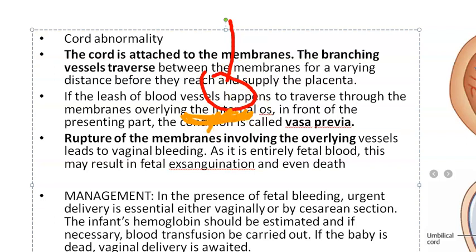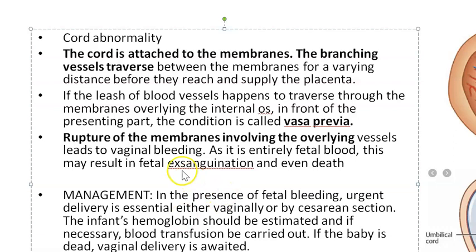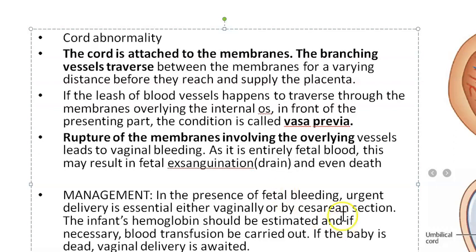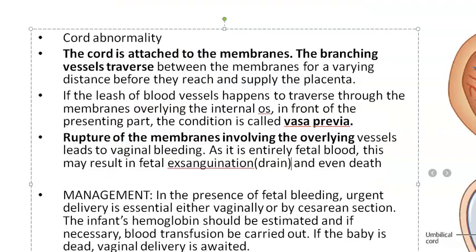When this membrane ruptures, blood vessels inside will bleed, leading to vaginal bleeding. This vaginal bleeding is very dangerous because the blood is entirely fetal blood — not maternal blood. This can lead to fetal exsanguination and even fetal death. Exsanguination means getting completely drained of blood — it is the fetus that is suffering.